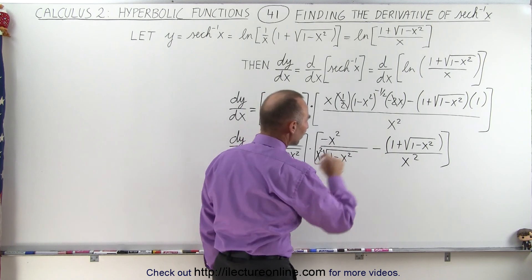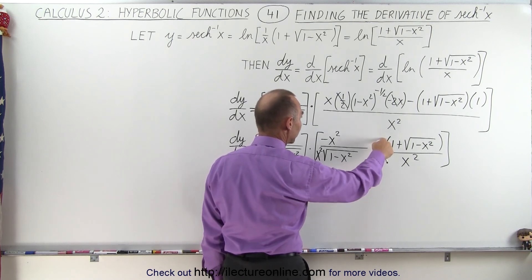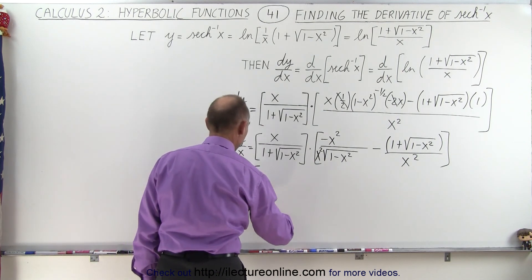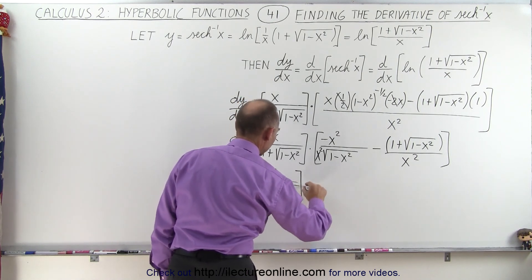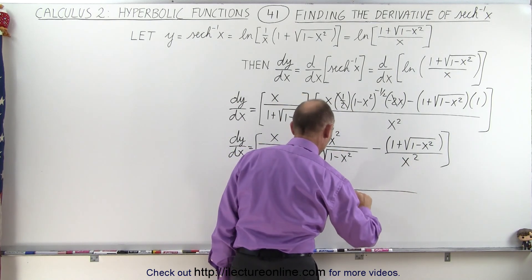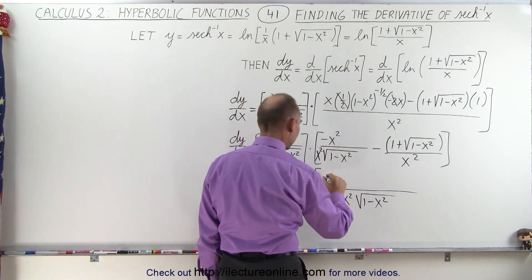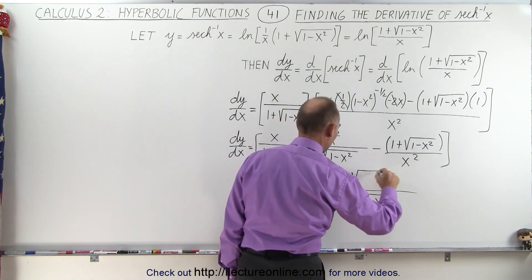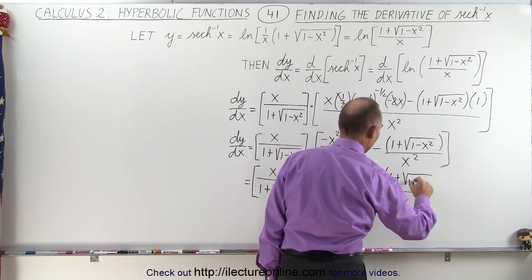Writing this as two separate fractions allows us to combine over a common denominator. Multiplying through, this equals x divided by 1 plus the square root of 1 minus x squared, times: over a common denominator of x squared times the square root of 1 minus x squared, the numerator has minus x squared, minus the square root of 1 minus x squared multiplied by 1 plus the square root of 1 minus x squared.